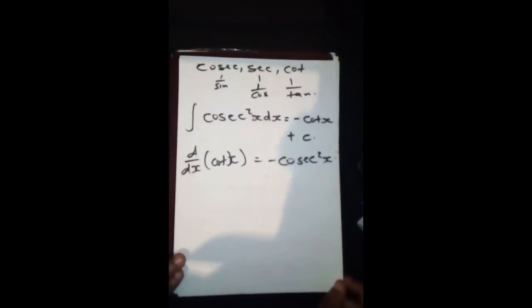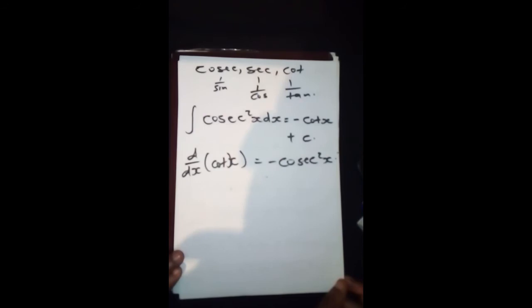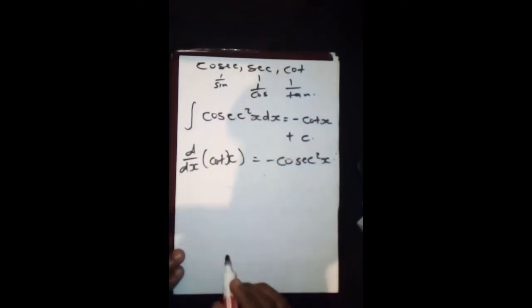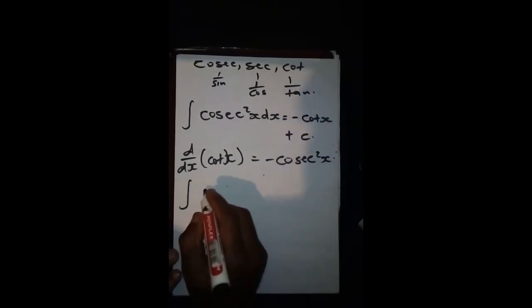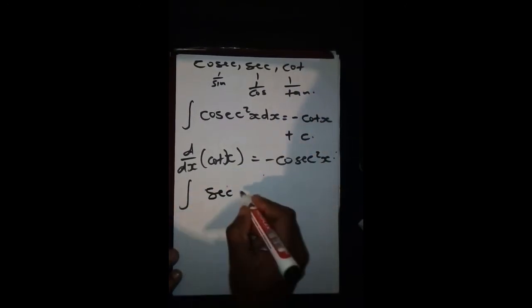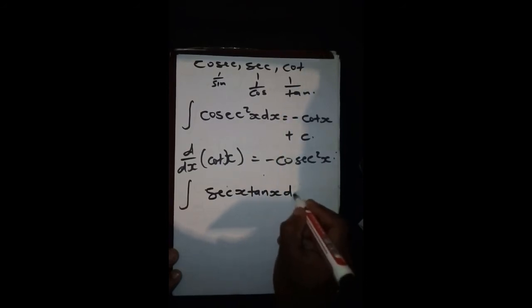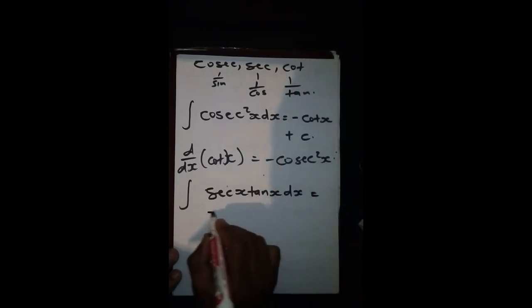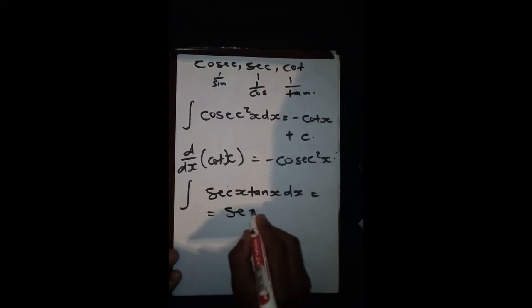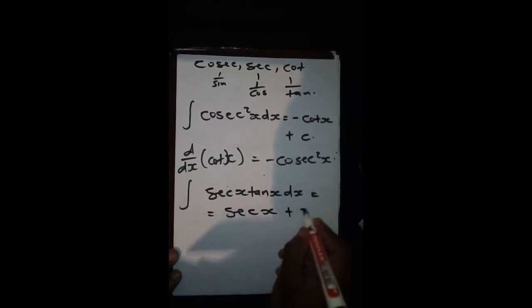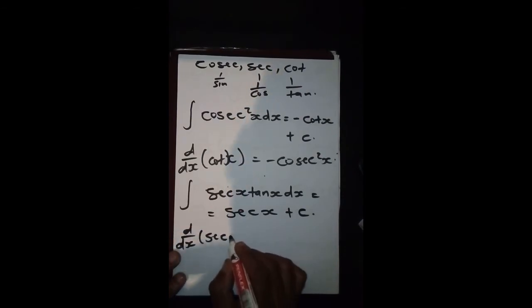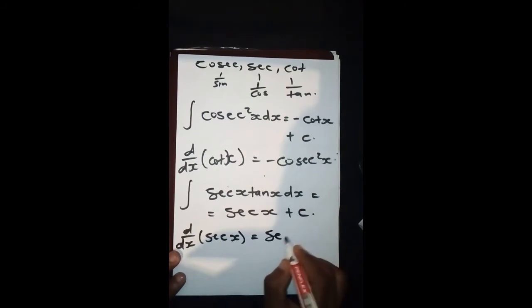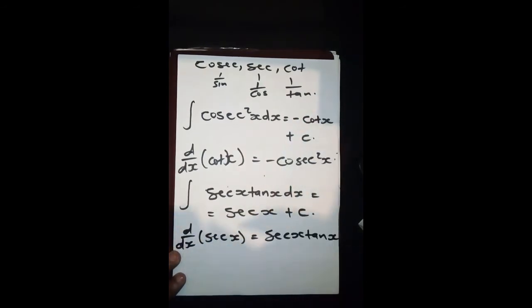Then moving forward, we've got sec, whereby for us to get sec, it's when we are integrating sec(x)tan(x)dx. This simply gives us sec(x) plus C, because d/dx of sec(x) is sec(x)tan(x). That's how we end up with this.